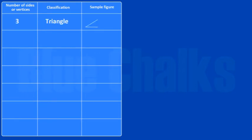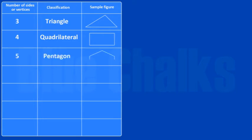If there are three sides or vertices, it is a triangle. If there are four, it is a quadrilateral. In case there are five, it is a pentagon. In case of six sides or vertices, it is a hexagon.